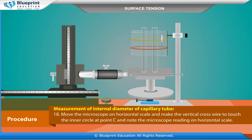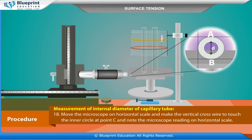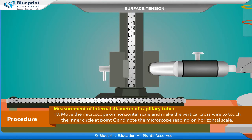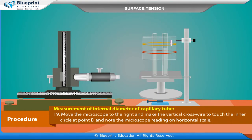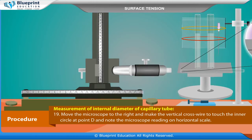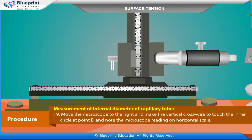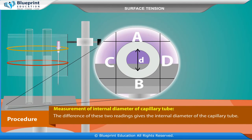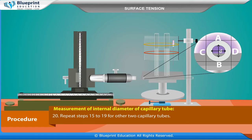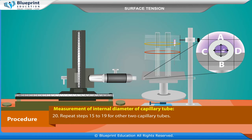Move the microscope on the horizontal scale and make the vertical cross wire touch the inner circle at point C, and note the microscope reading on the horizontal scale. Move the microscope to the right and make the vertical cross wire touch the inner circle at point D, and note the microscope reading on the horizontal scale. The difference of these two readings gives the internal diameter of the capillary tube. Repeat these steps for the other two capillary tubes.